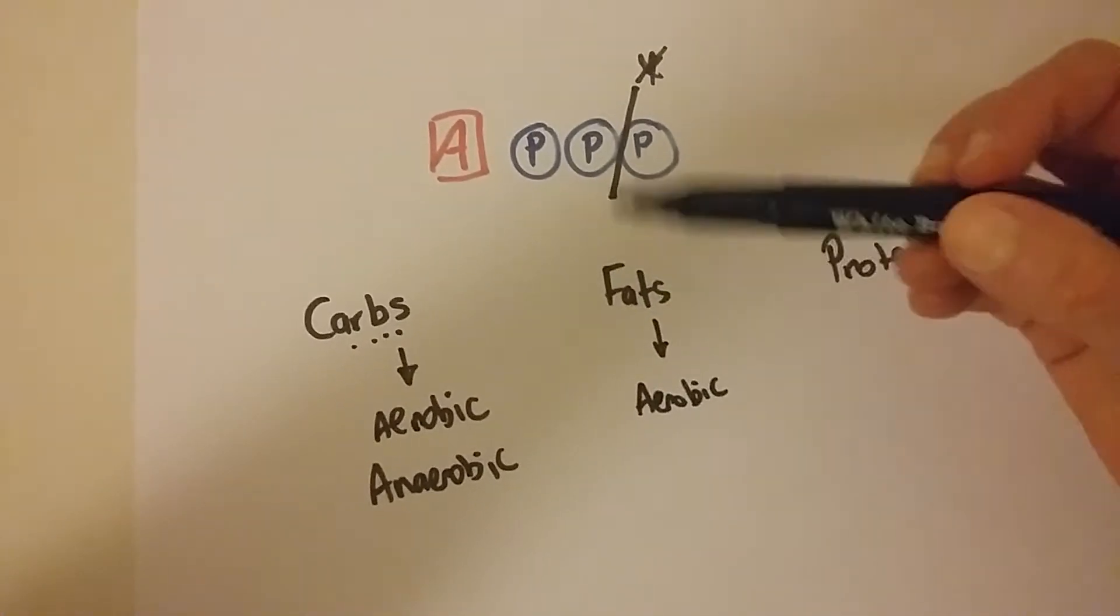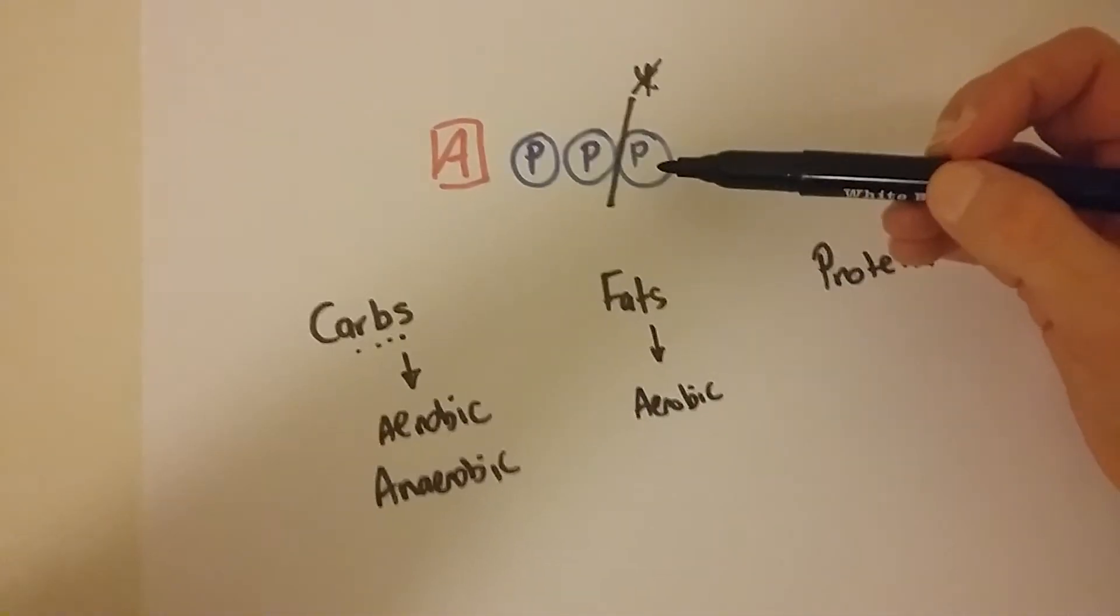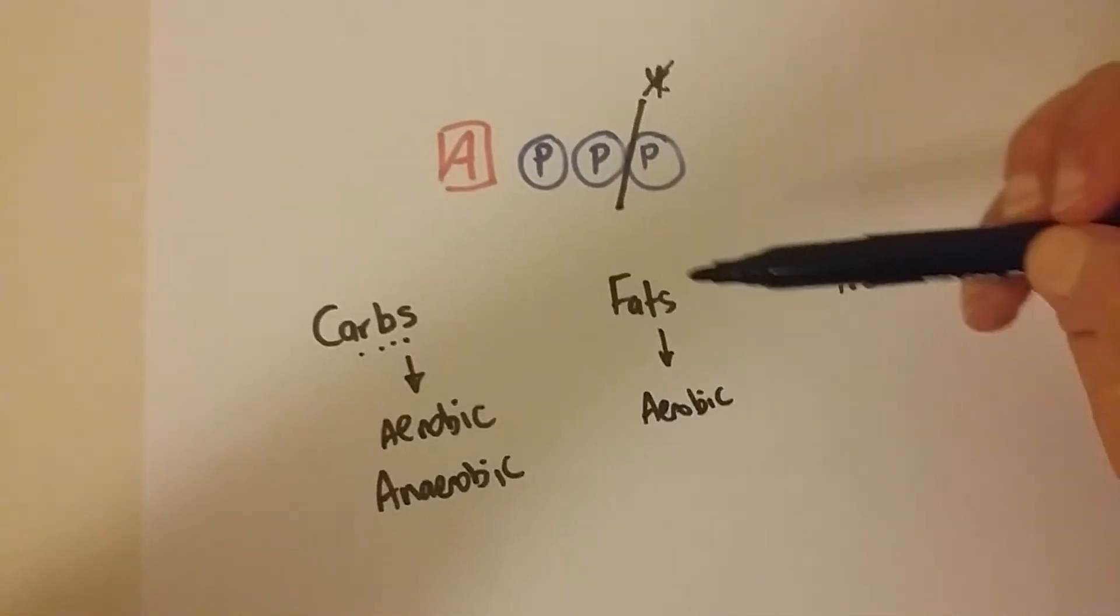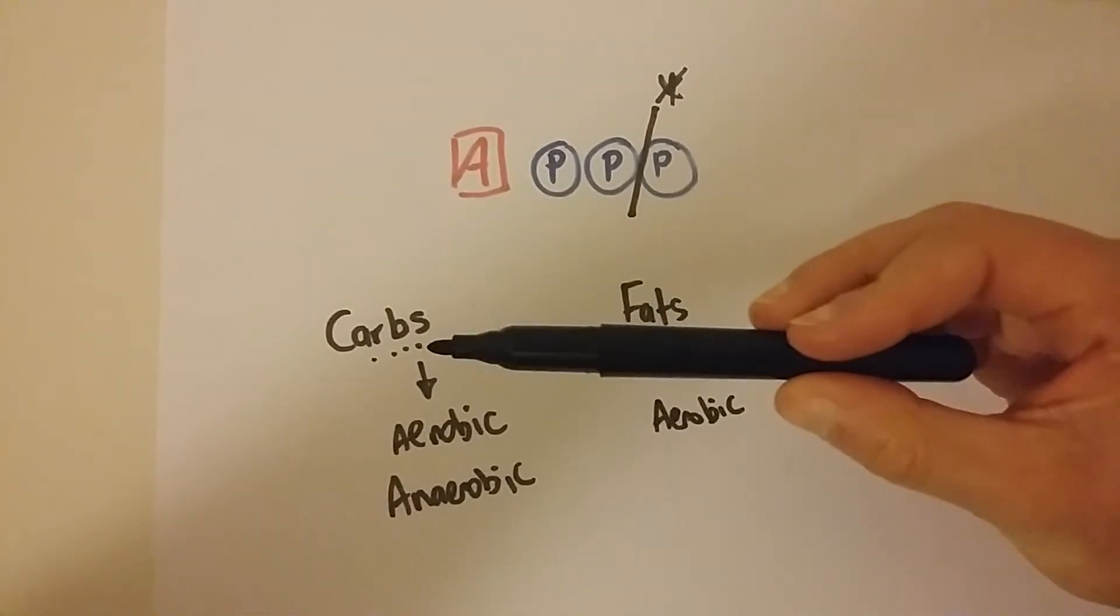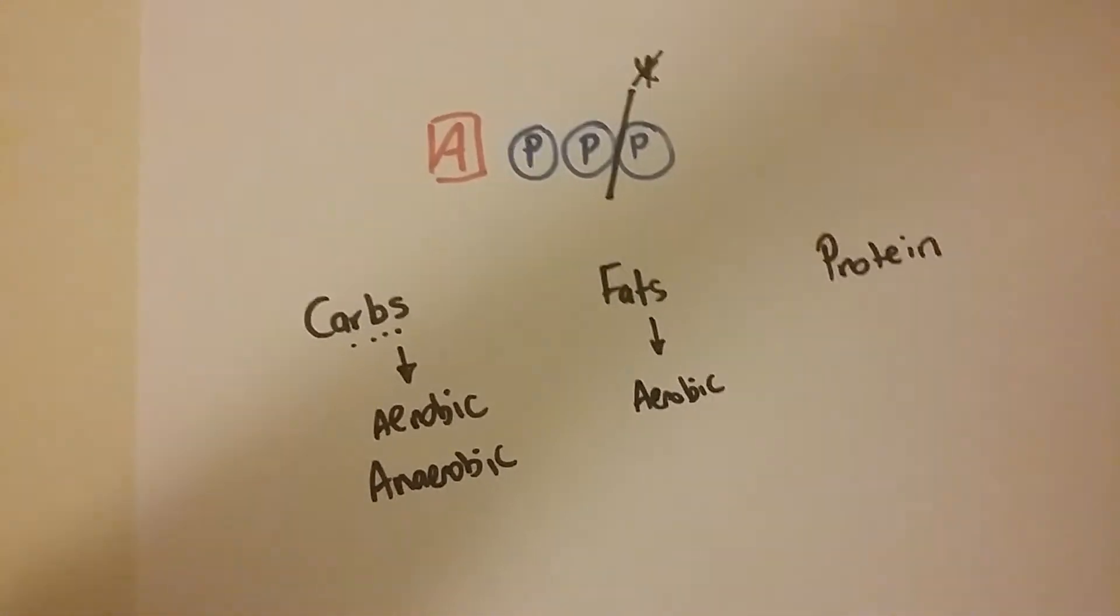So again fats are really important and they're pretty easy to turn into ATP, but we don't get as many of them per molecule as we do for carbs. So carbs are the most efficient, fats are next in line.